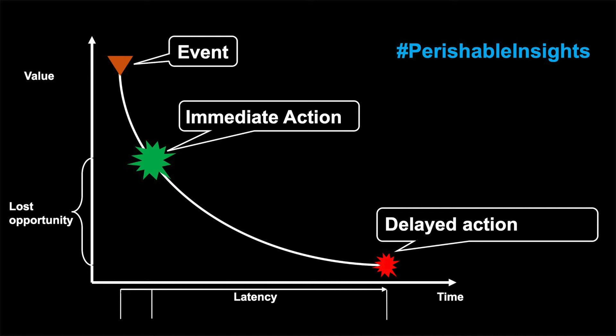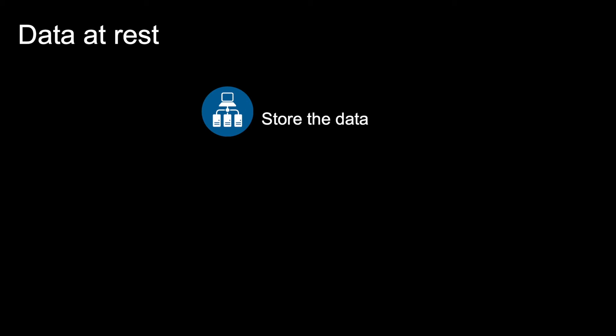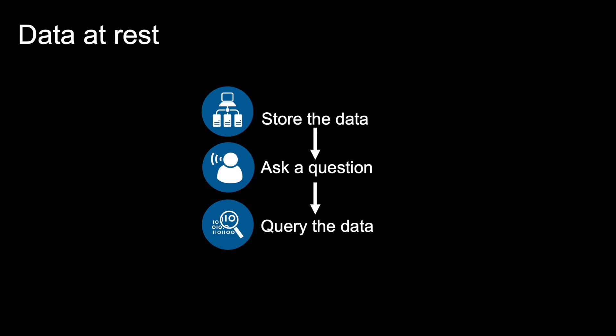Let's start with the general pattern of using data at rest. Data is stored in the repository. Then someone comes up with a business question to ask. We can then formulate a query to the repository to retrieve the data we need to answer the question.